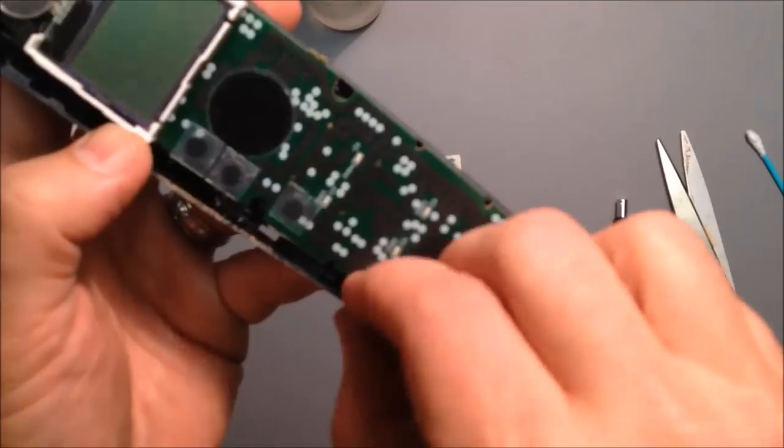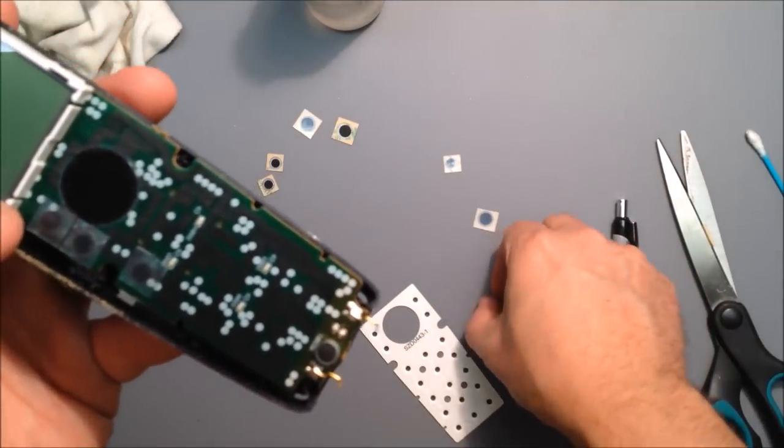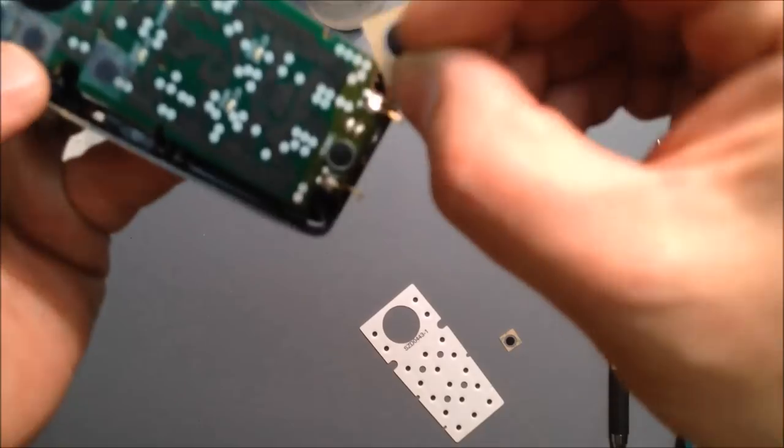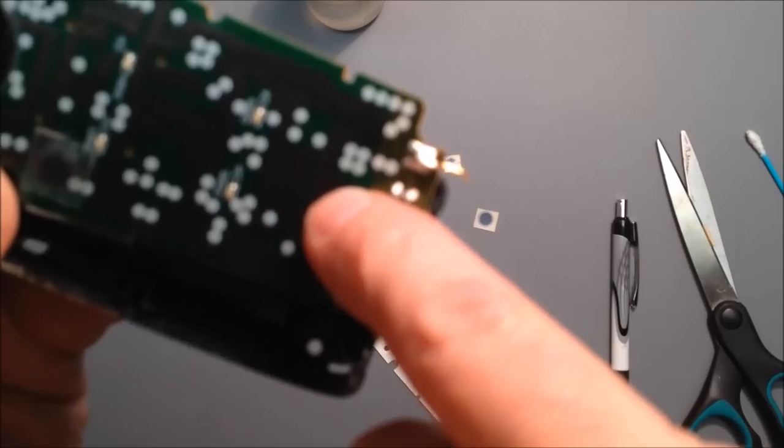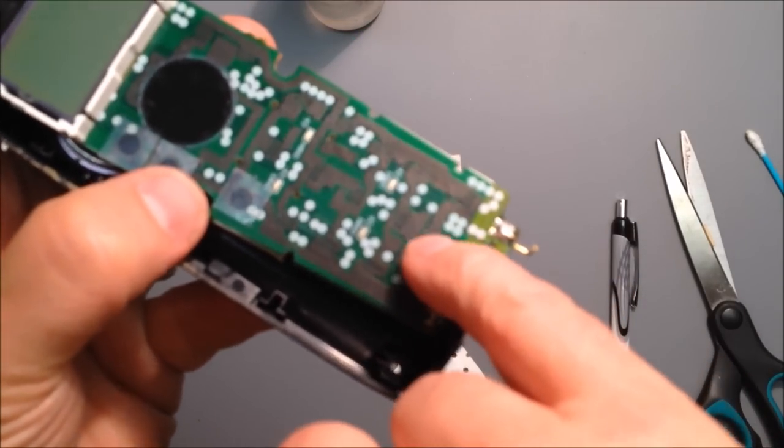But what you wouldn't want to do is have a big one here and have it short out between tracings that aren't supposed to touch each other.